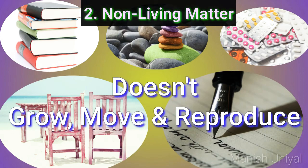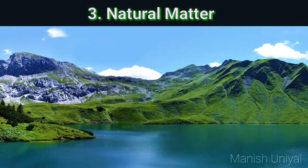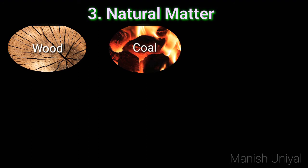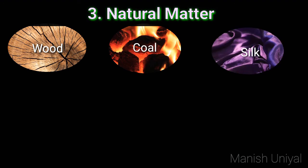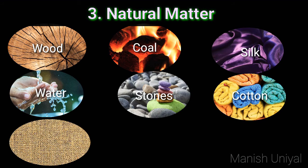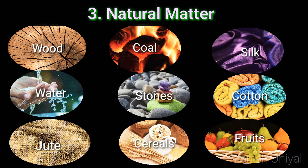Non-living matter can be natural or man-made. Natural matter occurs in nature and can be used to make useful substances. Examples include wood, coal, silk, water, stone, cotton, jute, cereals, fruits, etc.